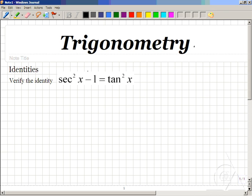In trigonometry, to verify the identity that secant squared x minus 1 equals tangent squared x, we first note that our goal is to write both sides of this identity as the same result.